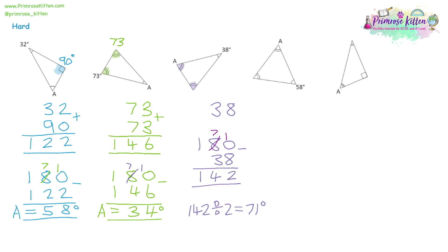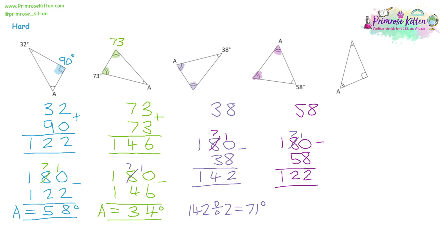Question four works the same way. We've been given 58 degrees. Looking at the notation, we have two angles which are the same size, but neither is the 58 degrees. So we do 180 take away 58 — borrow to start. 10 take away 8, 7 take away 5, 1 take away 0 gives 122 degrees. That represents both missing equal angles. Divide by 2: half of 22 is 11, half of 100 is 50, so 11 and 50 is 61 degrees.